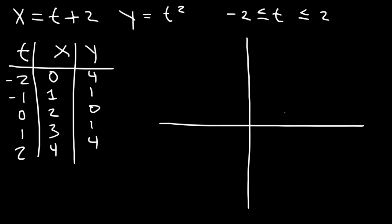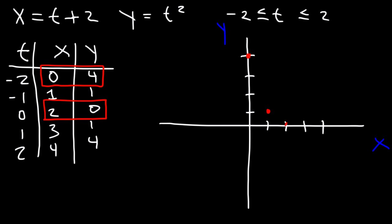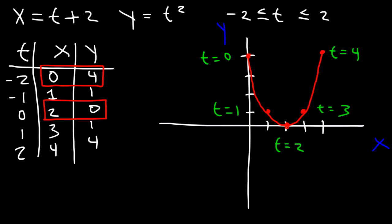Let's plot the points. The first point is at (0, 4), the next is at (1, 1), then (2, 0), (3, 1), and finally (4, 4). So that's the shape of the graph. Here t equals 0, 1, 2, 3, and 4 correspond to those points respectively.